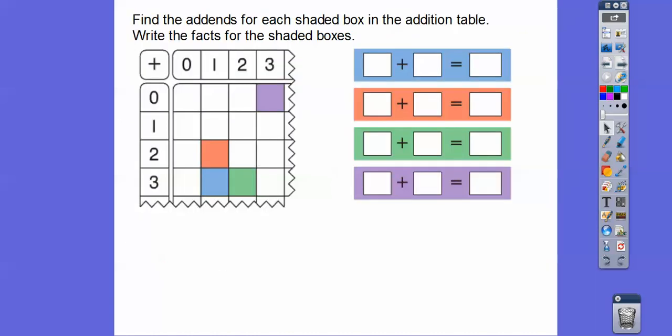And then I found this. So find the addends. The addends are just the numbers that are being added together. So find the sum for each shaded box in the addition table. Write the facts for the shaded boxes.